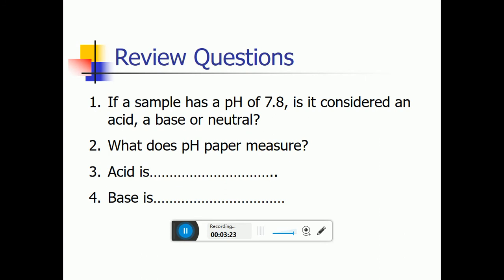I hope you all have gone through these questions. In the first question, the pH is 7.8, which means that the pH is more than 7, so it's alkaline. The second one, what does pH paper measure? pH paper measures the pH of the solution. For the third and fourth questions, acids are solutions which, when dissociated, give hydrogen ions. Bases are solutions which give hydroxide ions.